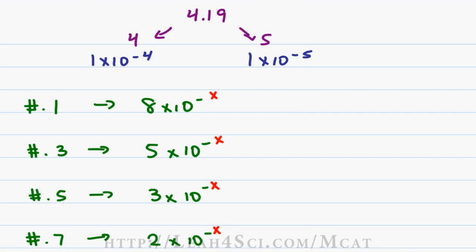In review, if we have a number 0.1, we get an 8 times 10 to the minus x. I put x instead of the number because if we have 4.19, our exponent will be a number times 10 to the minus 5. So if we had 4.1, it would be 8 times 10 to the minus 5. A number 0.3 will be 5 times 10 to the minus that power.